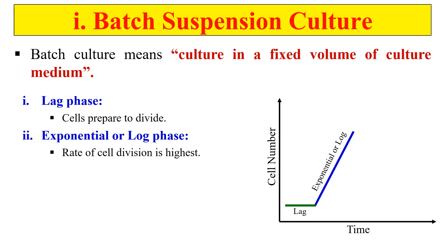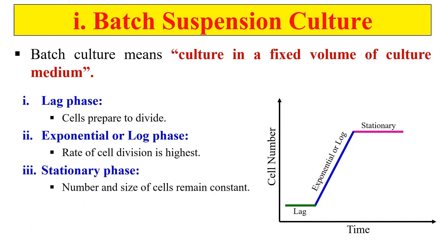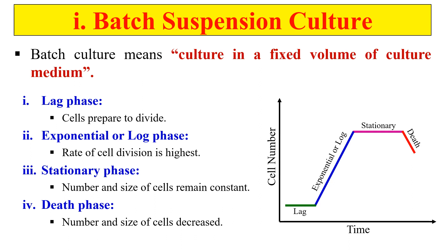In the exponential or log phase, the rate of cell division is highest. After this comes the stationary phase — during the exponential phase, cells utilize the nutrients present in the medium, but as growth increases, nutrients start decreasing. In the stationary phase, the number of cells growing equals the number of cells dying, so the net growth rate is zero.